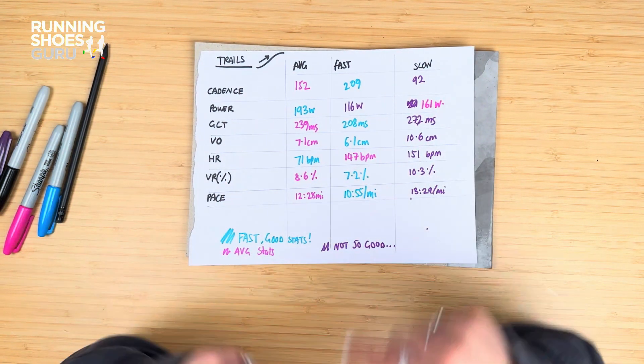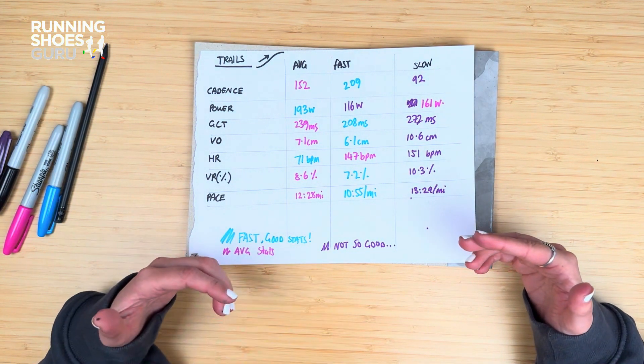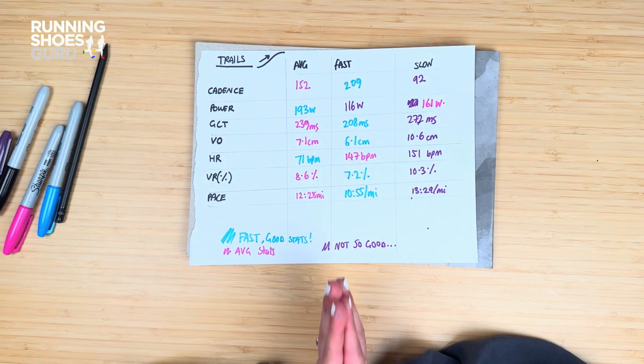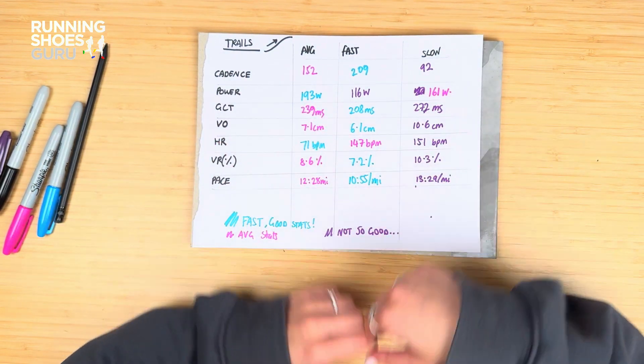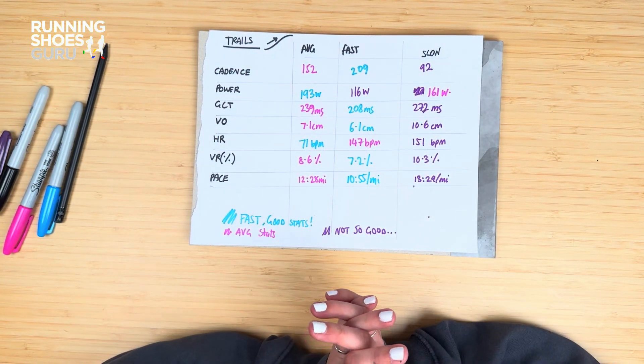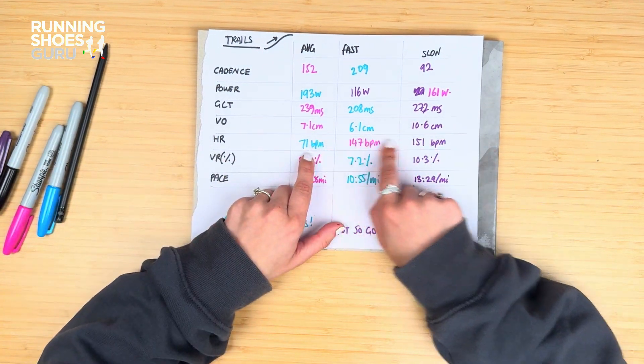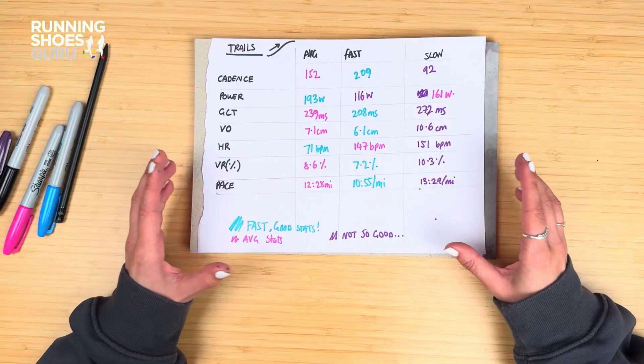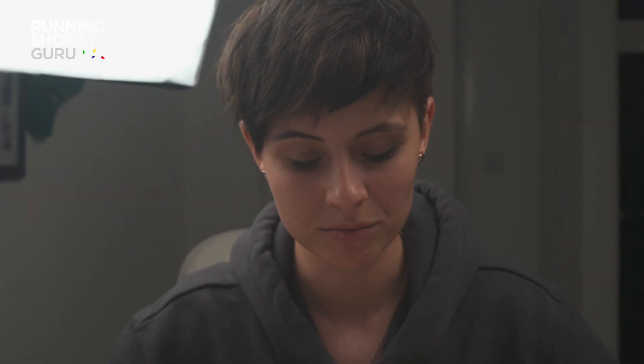Power output: by doing the fastest strides up the hill, I was actually getting out the least power. The best was actually my average pace — just my natural strides getting up the hill. It's probably where you're more comfortable and just throwing your body up. Fastening or slowing your cadence didn't help. It was actually better just to naturally run up it. I spent way less time in contact with the ground with the faster cadence — that goes for trails as well. Heart rate was a bit questionable; apparently I had 71 beats per minute running up a hill.